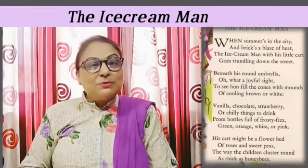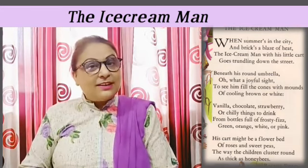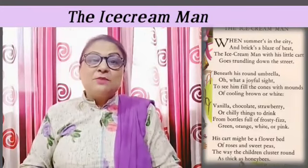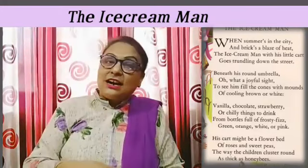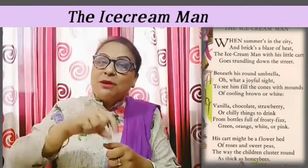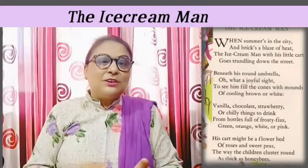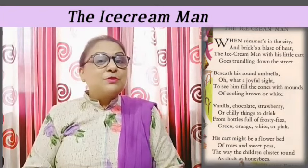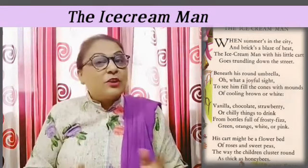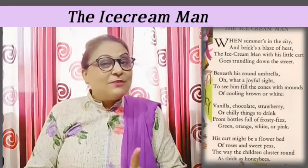So he is talking about chocolate. He says he has a round umbrella so he doesn't get too much sun on the cart. When they put ice cream in the cones with the scoopers, these are the small mounds — brown and white — which means the flavour of the ice cream is chocolate and vanilla.